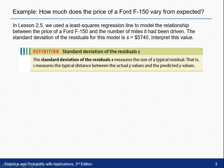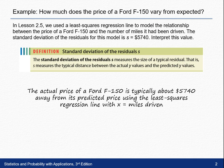For us, our y-values here are the prices of the Ford F-150. To interpret this, the actual price of a Ford F-150 is typically about $5,740 away from its predicted price using the least-squares regression line with x = miles driven.